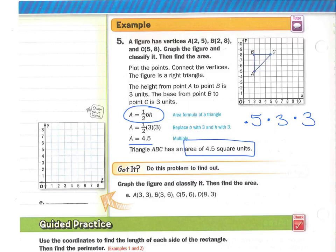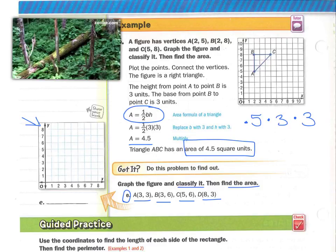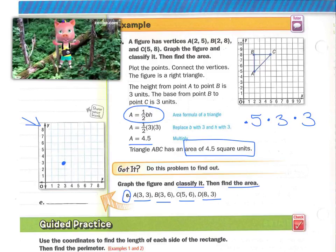Let's do problem E. Please graph the figure using the given points, classify it — meaning tell me what kind of figure it is — and then find the area. Press pause now. The points A, B, C, and D form a trapezoid with an area of 10.5 square units. Check with your teacher if you got any of that incorrect.